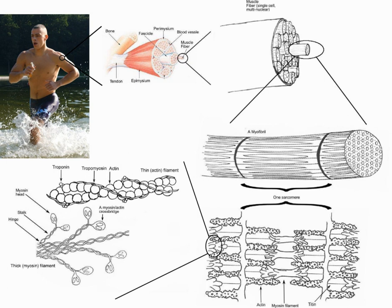Skeletal muscles are sheathed by a tough layer of connective tissue called the epimysium. The epimysium anchors muscle tissue to tendons at each end, where the epimysium becomes thicker and collagenous. It also protects muscles from friction against other muscles and bones. Within the epimysium are multiple bundles called fascicles, each of which contains 10 to 100 or more muscle fibers collectively sheathed by a perimysium. The perimysium is also a pathway for nerves and the flow of blood within the muscle.